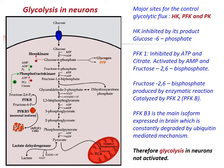Glycolysis in neurons — major sites for control of glycolysis are HK, PFK, and PK. HK is inhibited by its product glucose-6-phosphate. PFK1 is inhibited by ATP and citrate, and activated by AMP and fructose-2,6-bisphosphate. Fructose-2,6-bisphosphate is produced by PFK2, known as PFK-B in the brain. PFK-B3 is the main isoform expressed in the brain and is constantly degraded by a ubiquitin-mediated mechanism. Therefore, glycolysis in neurons is not highly activated.